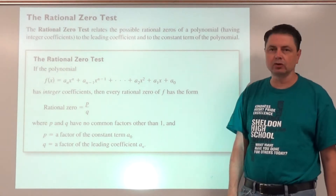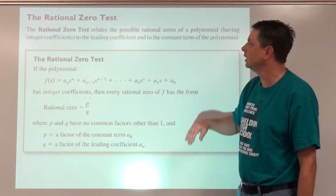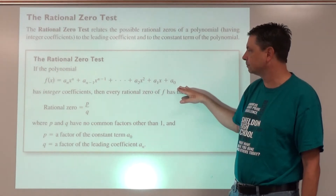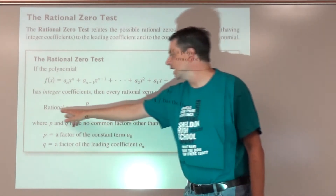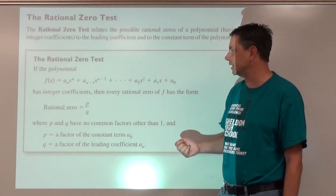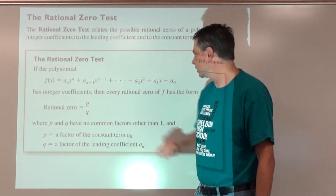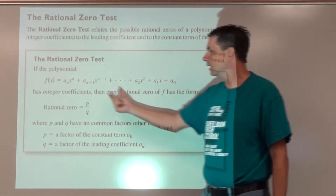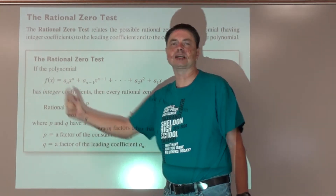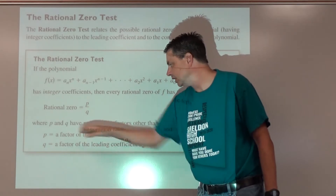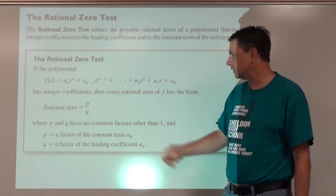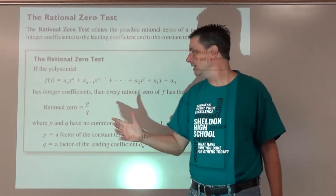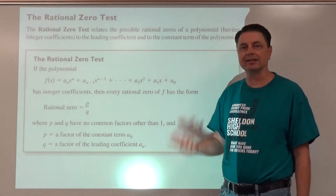The rational zero test: in order to see if we can find rational zeros, if the polynomial function f of x is written in normal form and it does have rational zeros, they will be represented by the form p over q, where p is a factor of your constant term and q is a factor of your leading coefficient. Based on those values, we create a list of possible rational zeros and test them out.